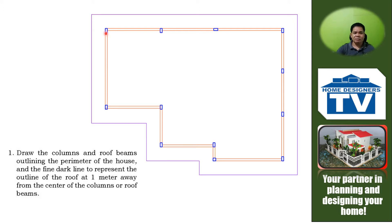From this point you're going to measure 1 cm going outward. This completes the first step of drafting the reframing plan of your shed roof.